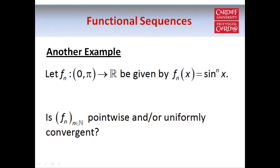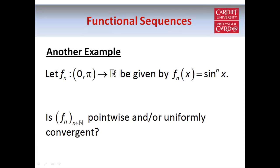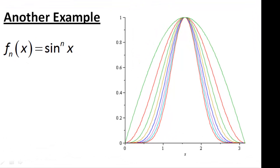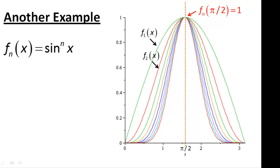Let's look at one more example. The domain is the open interval from 0 to π, and fn(x) = sin^n(x) — that is, sin(x) raised to the power n — for all natural numbers n. Here's a diagram of the sequence: each function is a curve between 0 and 1, and these curves rise and descend more sharply as n increases. Since sin(π/2) = 1, each function attains a maximum of 1 at x = π/2.